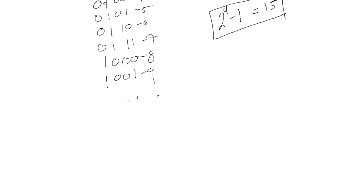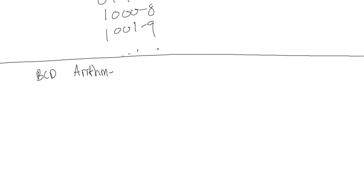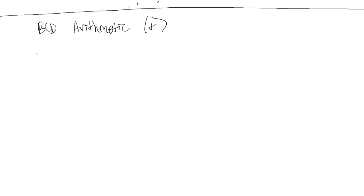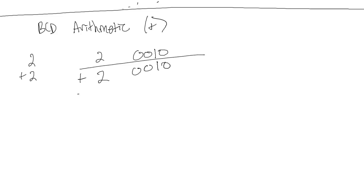Let's talk about something simple we can do with BCD. We're going to leave subtraction in BCD for later because that's a whole topic in itself, but let's talk about BCD arithmetic — adding two BCD numbers. Let's do 2 plus 2 in BCD. So 2 we write as 0010, plus 2 which is 0010, and we just add them up. We carry over and we get our answer, which equals 4. So this is BCD.